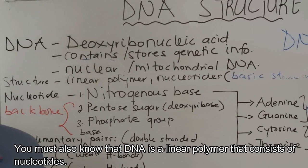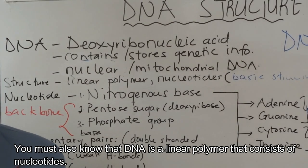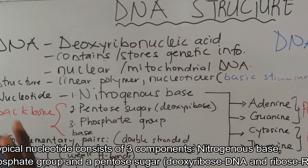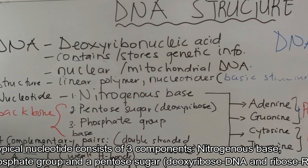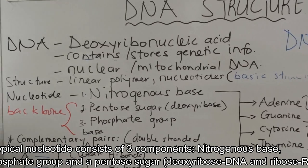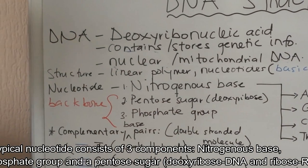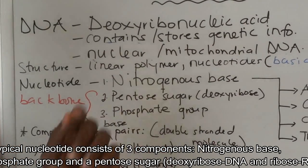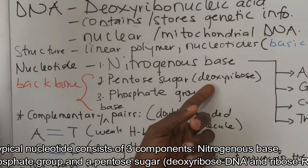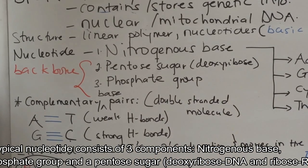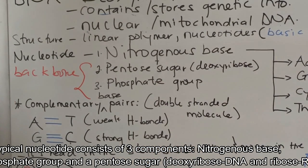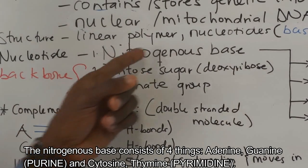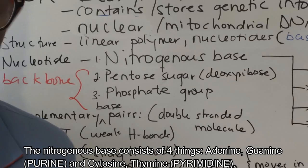You must also know that DNA is a linear polymer that consists of nucleotides. A typical nucleotide consists of three components: we have the nitrogenous base, the phosphate group, and the pentose sugar. In terms of DNA we call it deoxyribose sugar, and in terms of RNA we call it just ribose sugar.